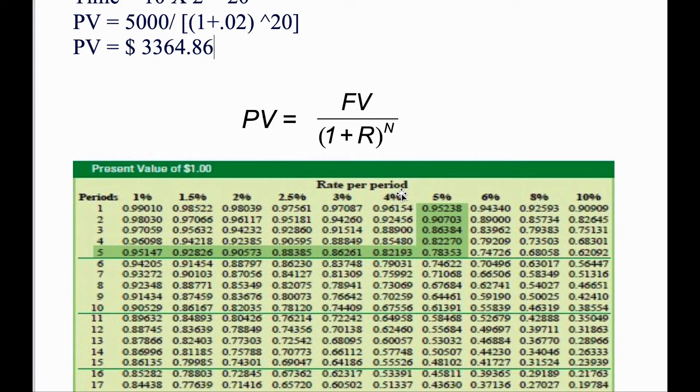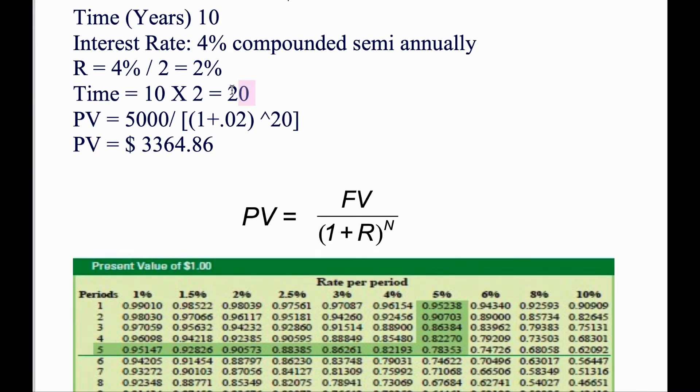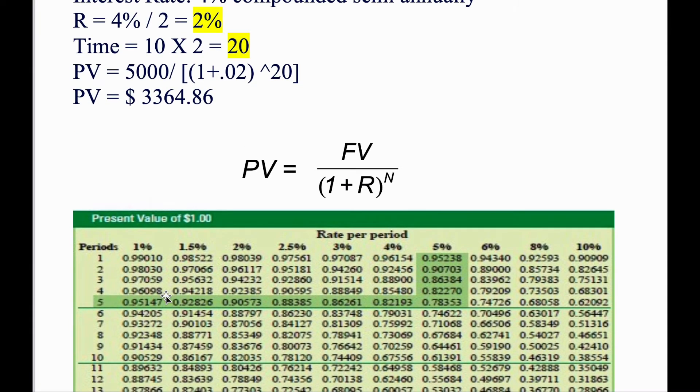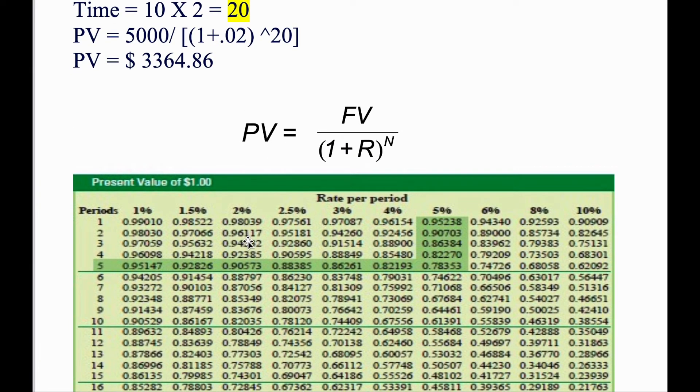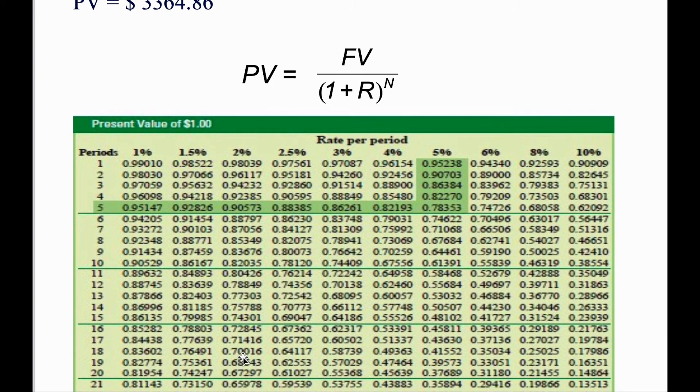Before you start using the table, you will need to determine what we just did here, the 20 and the 2%. Once you have these two information, then you can go to your table and look at the intersection of 2% and 20.